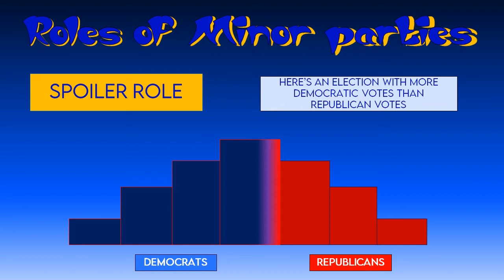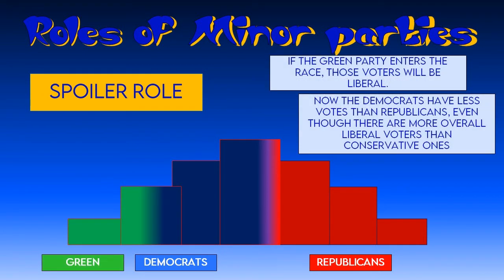Let's visualize how this works using the political spectrum. Here we see an election with more Democratic votes than Republican votes — small government on the right, big government on the left, with most Americans in the middle. In this election, Democrats got more votes and would have won. But if the Green Party entered the race, it would take away the most liberal voters. Now Democrats have fewer votes than Republicans, even though overall there are more liberal voters than conservative voters. The Green Party hurt the major party sharing its ideology, causing Republicans to have the most votes of the three parties despite a majority of liberal voters. This is the spoiler role.